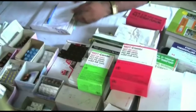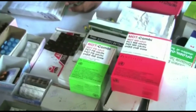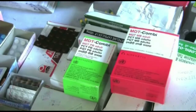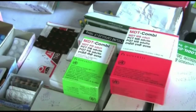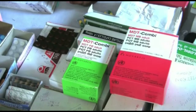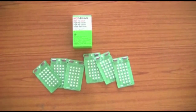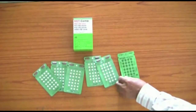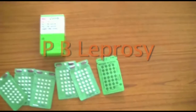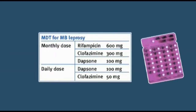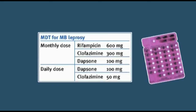All you have to do is to decide which course of treatment the patient needs and to make sure that they take it regularly. Some patients have a mild infection; this can be cured by treating the patient with 2 drugs for 6 months — this is called paucibacillary or PB leprosy. Other patients may have a more serious infection, which can be cured by treating the patient with 3 drugs for 12 months — this is called multibacillary or MB leprosy.